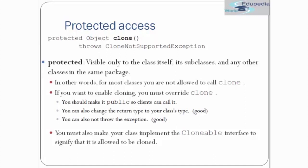You should make it public so clients can call it. You can also change the return type to your specific class type instead of returning object, making it generic for whichever class you are creating the clone for. You can also choose not to throw the exception if you are implementing Cloneable in your own class. You must also make your class implement the Cloneable interface to signify that it is allowed to be cloned.